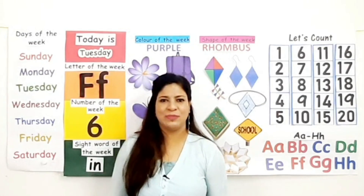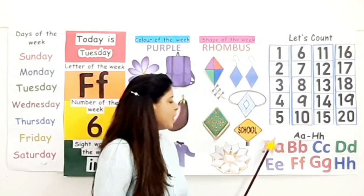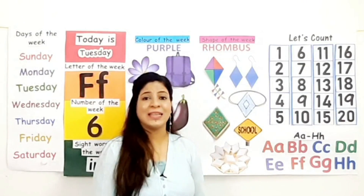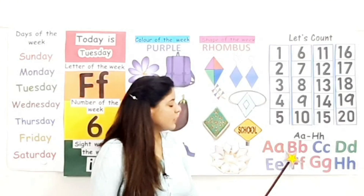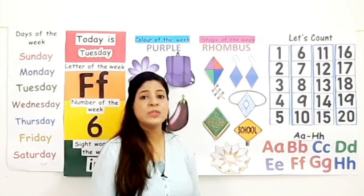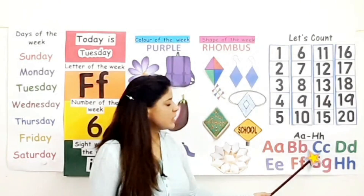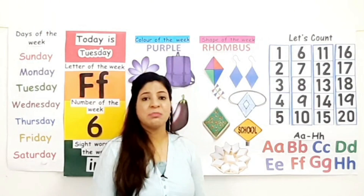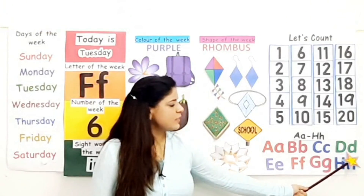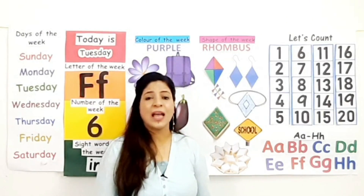Now let's say the sounds of letters A to H. This is uppercase letter A, this is lowercase letter A. Letter A makes the sound A. This is uppercase letter B, this is lowercase letter B. Letter B makes the sound B. This is uppercase letter C, this is lowercase letter C. Letter C makes the sound K. This is uppercase letter D, this is lowercase letter D. Letter D makes the sound D.